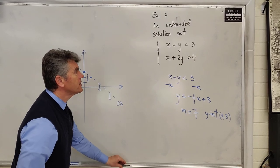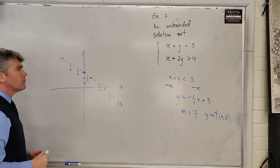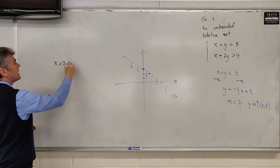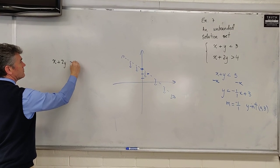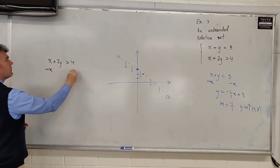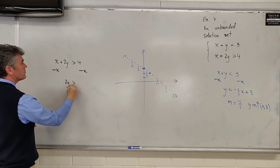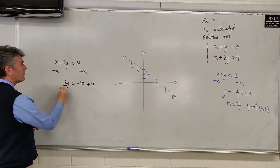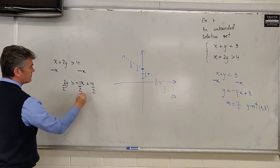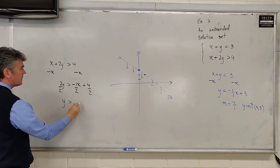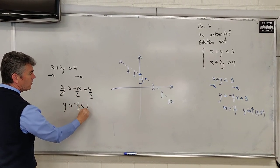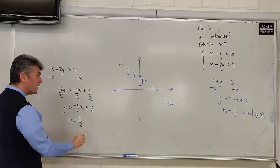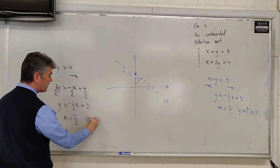Let's look at the second graph. We have x plus 2y is greater than or equal to 4. The process is exactly the same. Subtract x from both sides. 2y is greater than the opposite of x plus 4. Divide by 2 on both sides. Y is greater than negative 1 half x plus 2. Slope of negative 1 half. Y intercept of 0 comma 2.